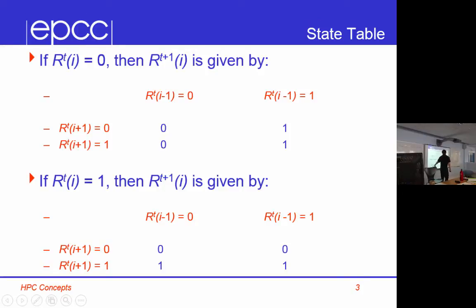If you're 1, your next value is 0 if the one ahead of you is empty. The point is, if your current state is 1, then the next state is 0 if the one ahead of you is 1, and 1 if the one ahead of you is 1. It doesn't depend on the state of the cell behind you.